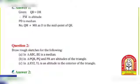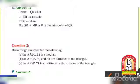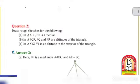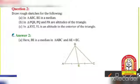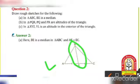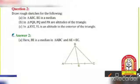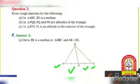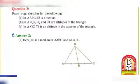Question No. 2: Draw the rough sketch for the following. (a) In triangle ABC, BE is a median. Here segment BE divides AC into two equal portions AE and EC, and the other end of this line segment is B, which is the vertex of triangle ABC.